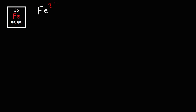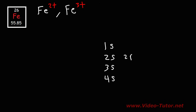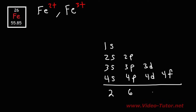For the next example, we're going to write the electron configuration for the Fe2+ ion and the Fe3+ ion. Feel free to pause the video and try these yourself. Fe is in the fourth row, so we go up to 4s. S holds up to 2, p up to 6, d up to 10, and f — notice the pattern increases by 4 — so f can hold a maximum of 14 electrons.